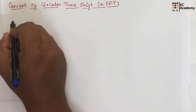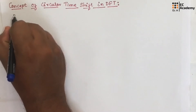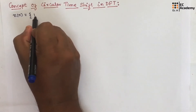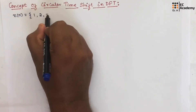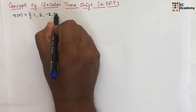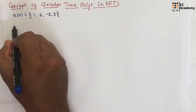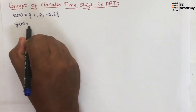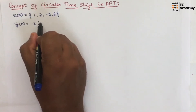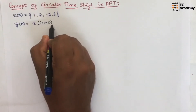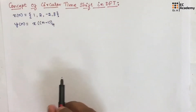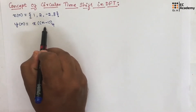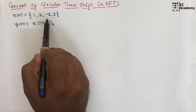To understand this, let us take an example where x of n is given as {1, 2, -2, 3}. This is a sequence and we need to find a new sequence y of n that can be given as x of n minus 1 mod 4. Here we need to find a new sequence which will be the circular shift of the given sequence x of n.